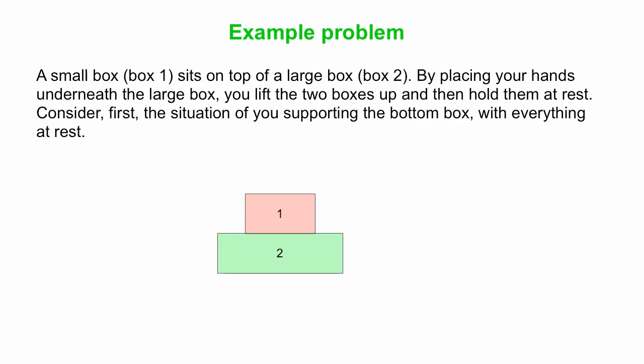So this is the example we're going to do. We have two boxes, one sitting on top of the other one, and you're actually going to lift the boxes up and you're going to hold them with your hands underneath box number two. So you're supporting the bottom box, you're not actually touching the top box. But everything's at rest. In video two, we'll talk about what happens when things accelerate, maybe if you get in an elevator and the elevator's accelerating, what happens. But for now, we'll just focus on everything remaining at rest.